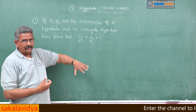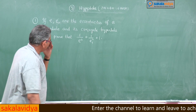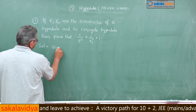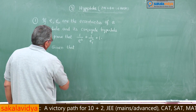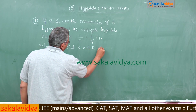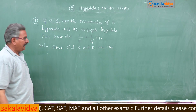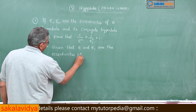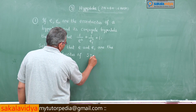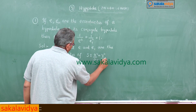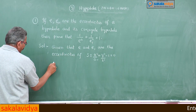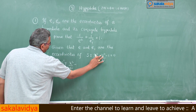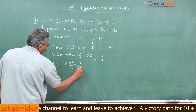While solving problems in examinations we can apply this. Now, let us do it. Given that E and E₁ are the eccentricities of a hyperbola S: x²/a² + y²/b² - 1 = 0, and its conjugate hyperbola S': x²/a² - y²/b² + 1 = 0.